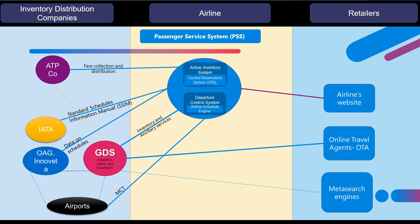GDS — the Global Distribution System — provides services for booking and inventory. GDS allows transactions between service providers in the travel industry, specifically airlines, hotels, car rental firms, and travel agencies. GDS centralizes services and provides travel-related transactions. Amadeus, Sabre, and Travelport are major GDS companies.